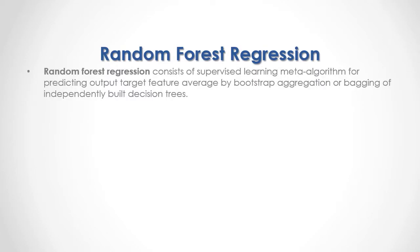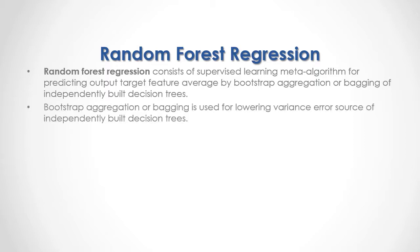Random Forest Regression consists of a supervised learning meta-algorithm for predicting output target feature average by bootstrap aggregation, or bagging, of independently built decision trees. Bootstrap aggregation or bagging is used for lowering variance error source of independently built decision trees. For full reference, I recommend that you read Breiman, Random Forests, published in Machine Learning in 2001.